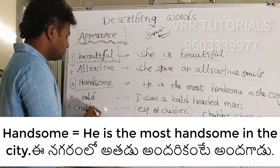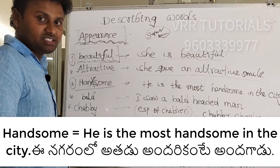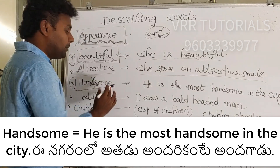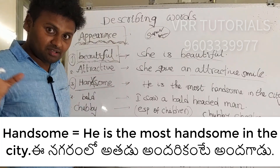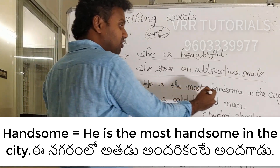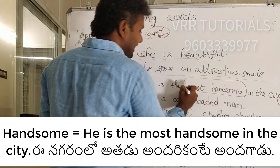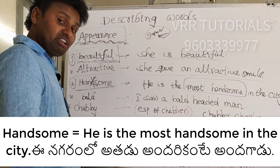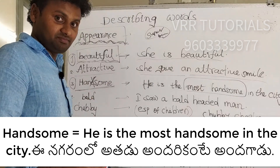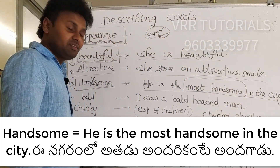The third word is 'handsome'. Remember that the 'D' is silent — it's pronounced 'handsome', not 'handsome' with a hard D. We especially use 'handsome' for describing men's appearance. For example: 'He is the most handsome in the city' or simply 'He is handsome.'